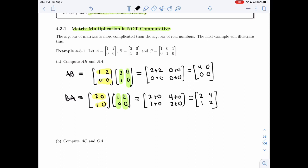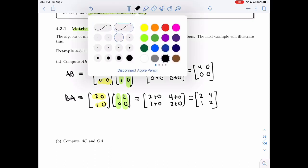So in one case, I get 4, 0, 0, 0. And the other one, I get 2, 4, 1, 2. These are not the same.